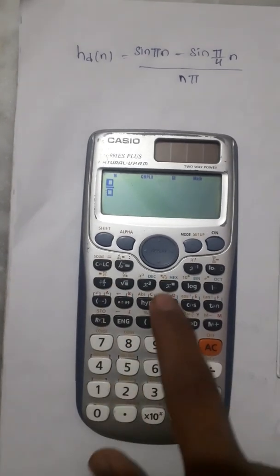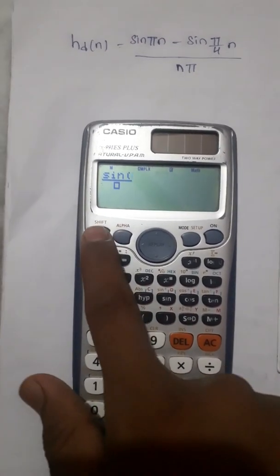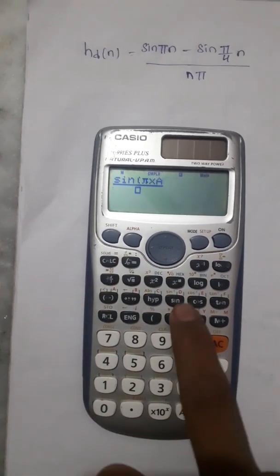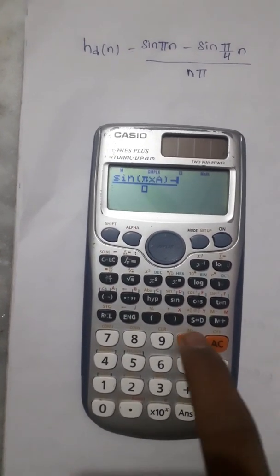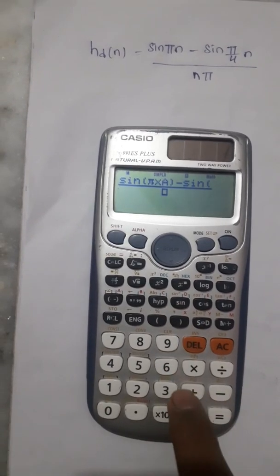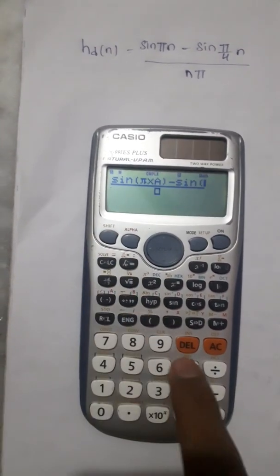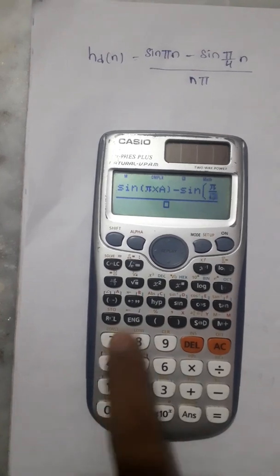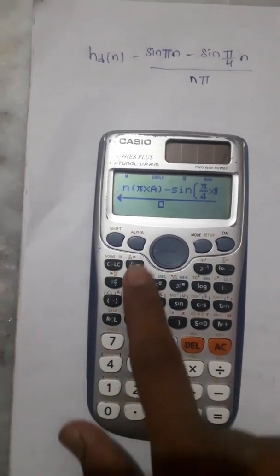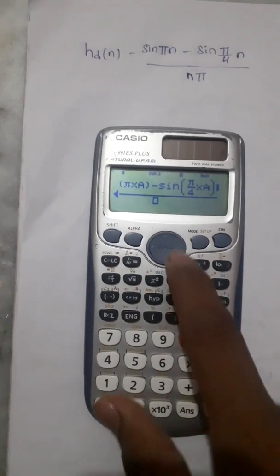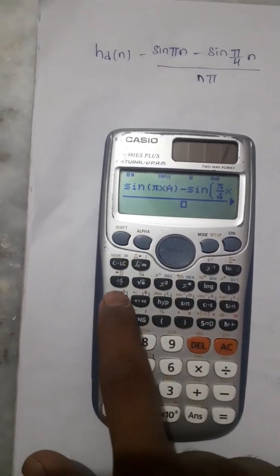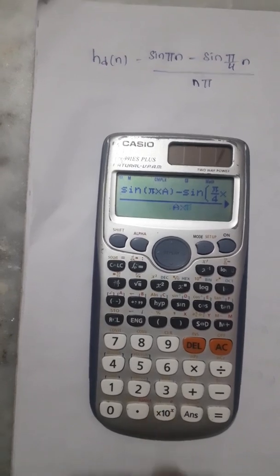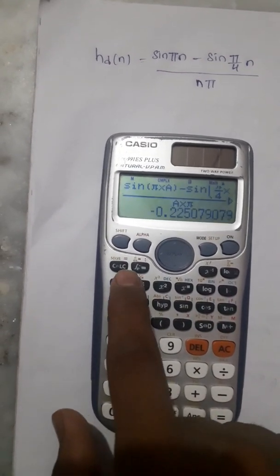Substituting in the calculator: sin πa minus sin(π/4)a, divided by aπ. We are taking the value a = 1.